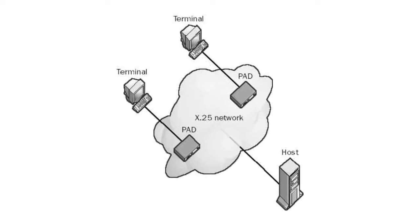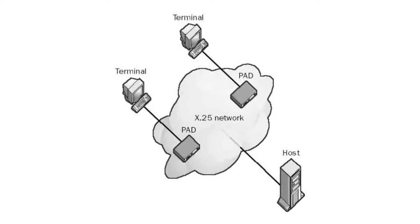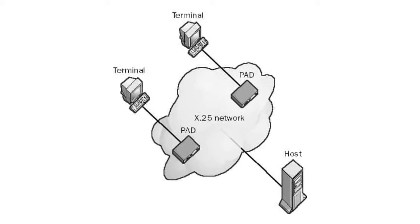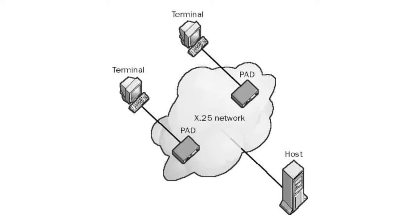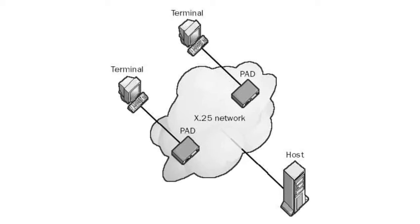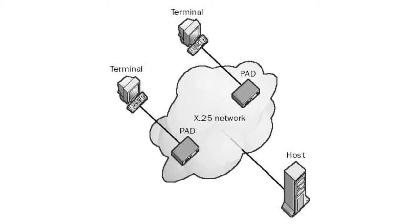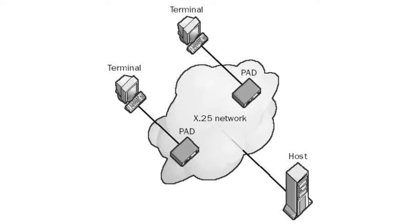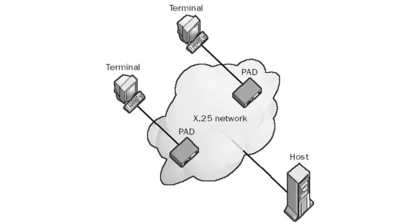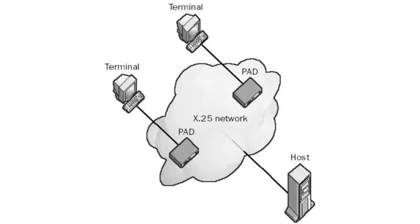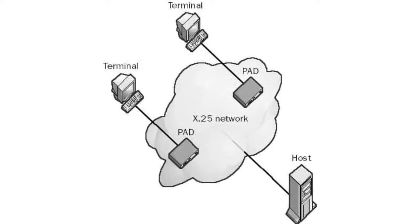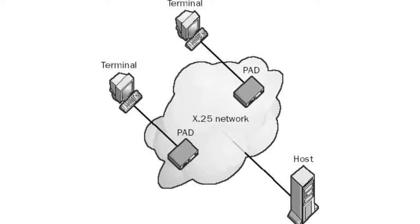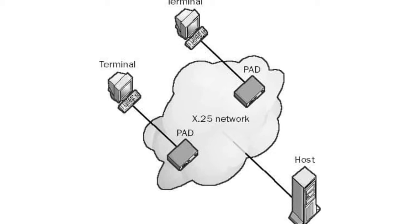When one computer on an X.25 network wants to communicate with another computer in a remote location, the first computer sends a signal to its attached PAD requesting a connection to the remote computer. The remote computer responds by either accepting the request and initiating full duplex communication, or rejecting the request. Either computer can terminate the link at any time. Note that this communication link is for data only — X.25 does not support voice transmission.